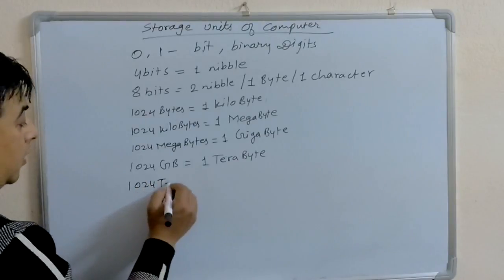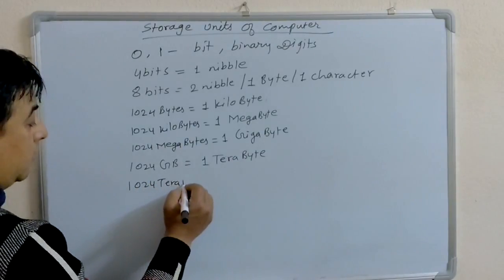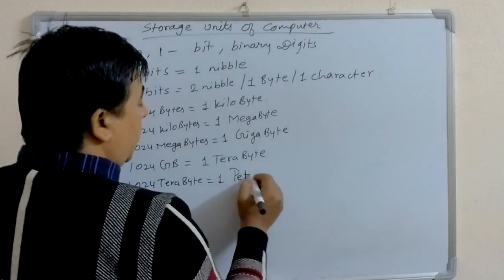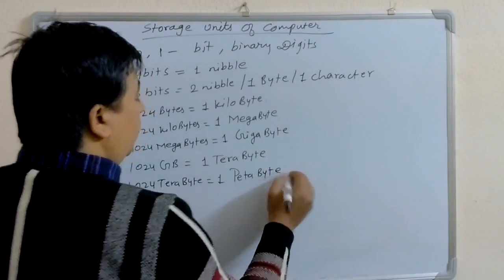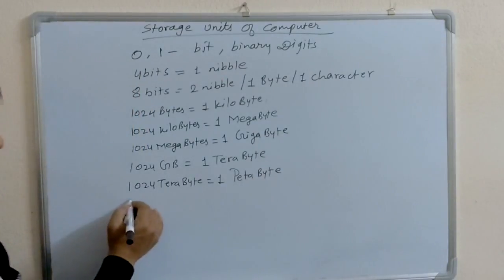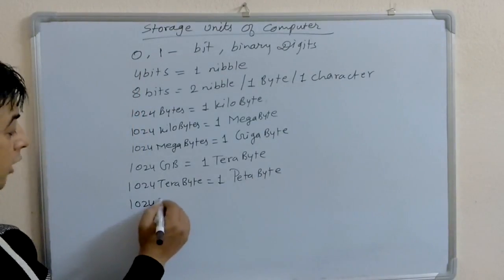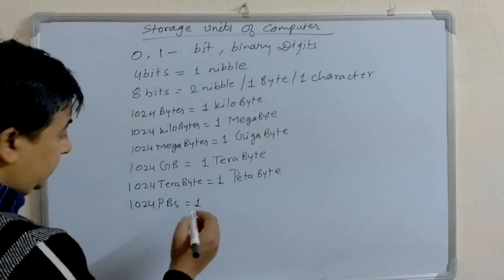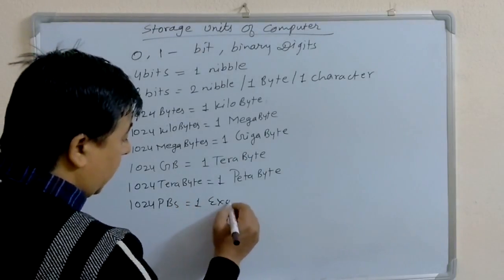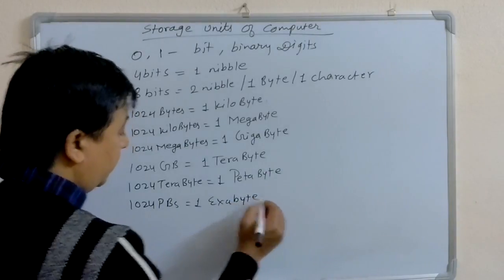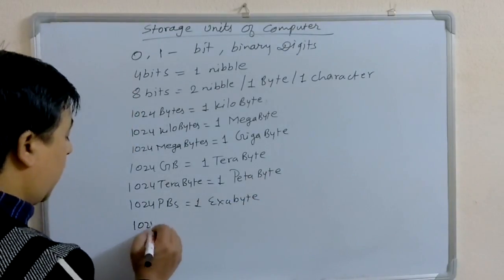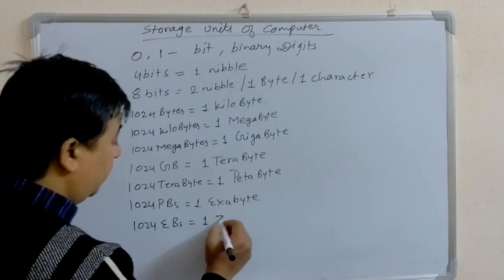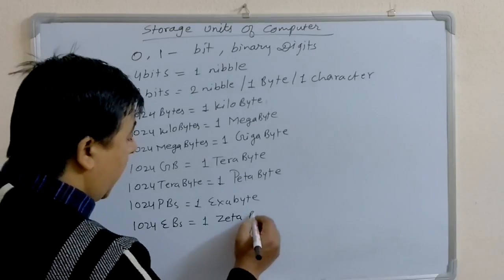1024 gigabytes is equal to 1 terabyte. 1024 terabytes is equal to 1 petabyte. 1024 petabytes is equal to 1 exabyte. 1024 exabytes is equal to 1 zettabyte.